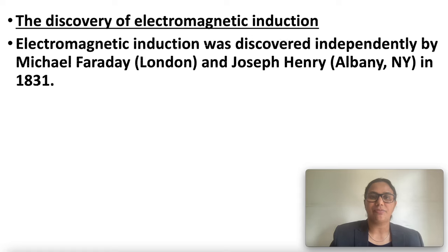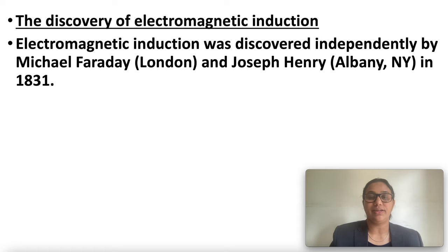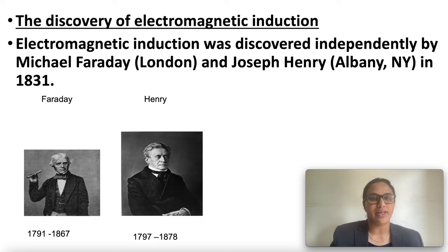Who discovered electromagnetic induction? Electromagnetic induction was discovered independently by Michael Faraday and Joseph Henry in 1831. Faraday made an important breakthrough by discovering how a moving magnet can be used to generate electric current. To observe this effect, let us perform the following activity.